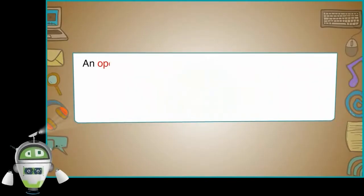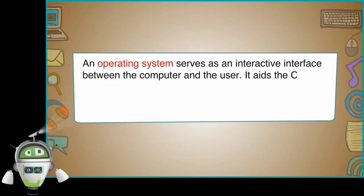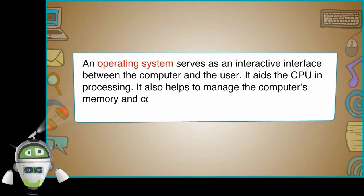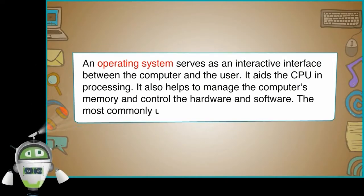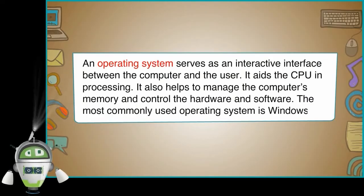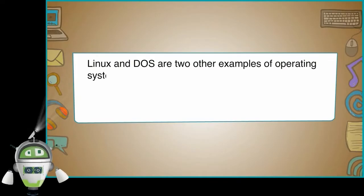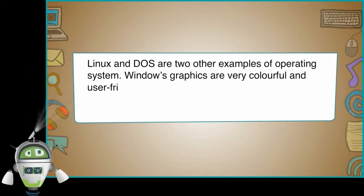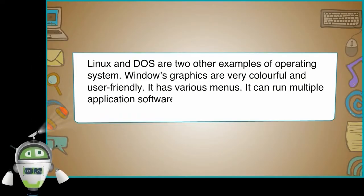An operating system serves as an interactive interface between the computer and the user. It aids the CPU in processing. It also helps to manage the computer's memory and control the hardware and software. The most commonly used operating system is Windows. Linux and DOS are two other examples of operating systems. Windows graphics are very colorful and user-friendly. It has various menus. It can run multiple application software at a time.